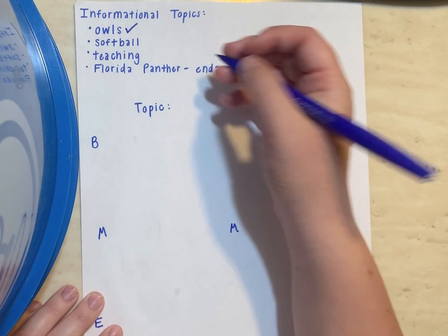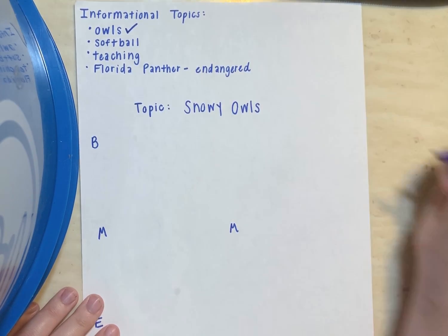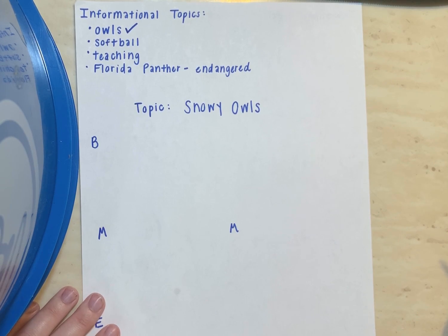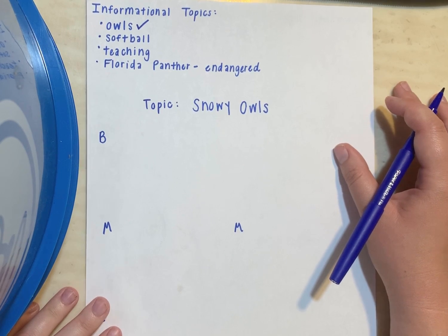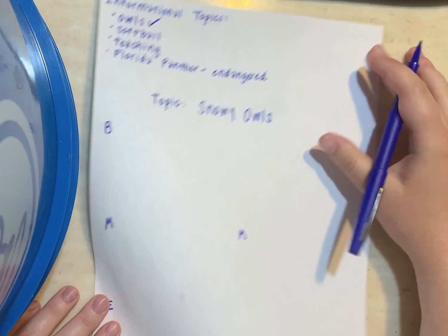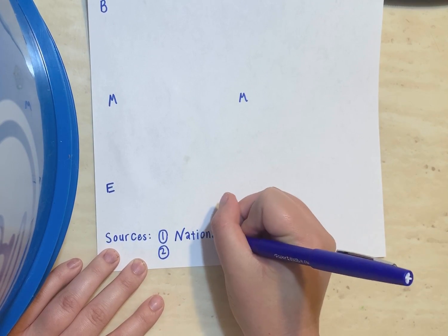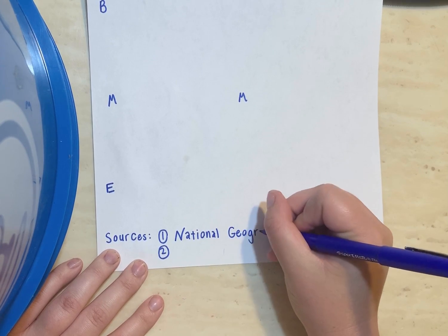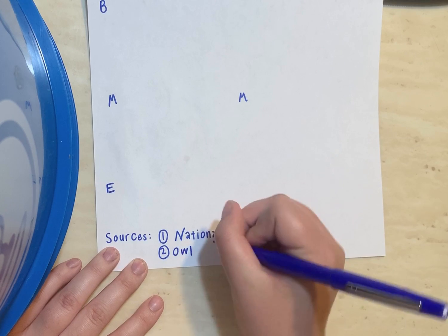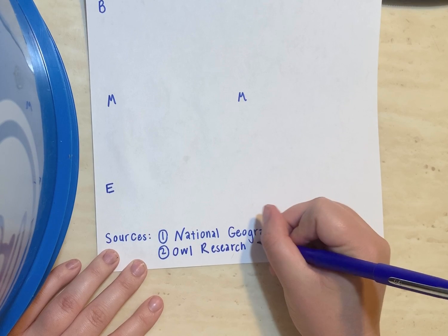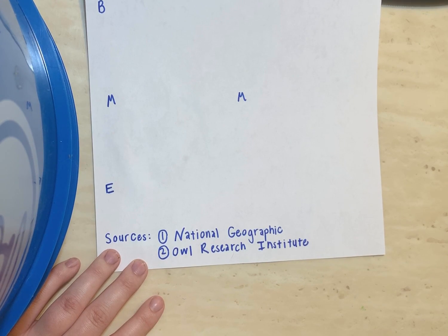My topic — the type of owl I chose to write about — was snowy owls. You've probably seen a snowy owl before. If you don't think you have, look up a picture. They're really cool animals. I looked through some sources, some websites on the internet that could help me with my research. One of my sources was National Geographic online, and my other source was the Owl Research Institute.